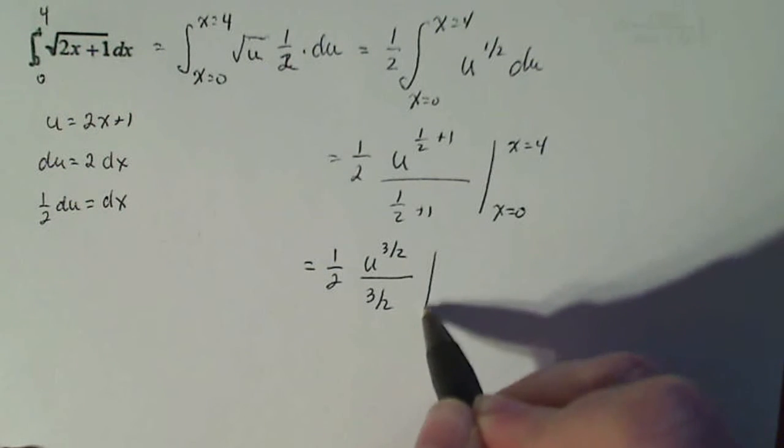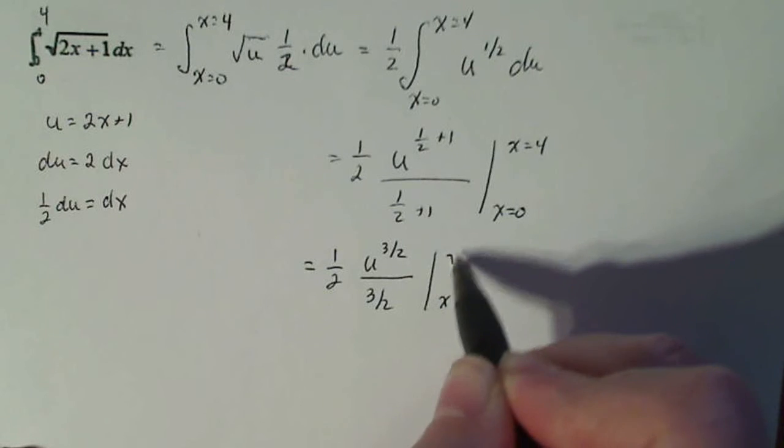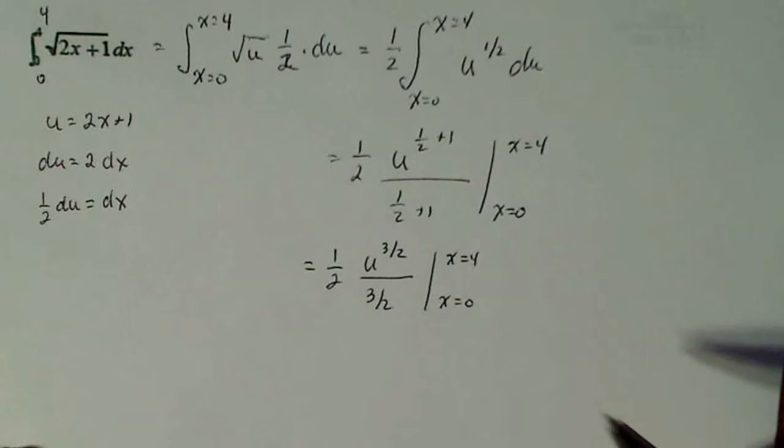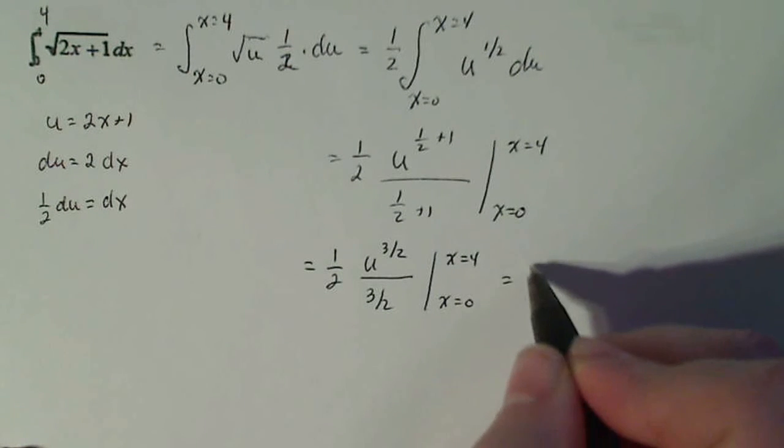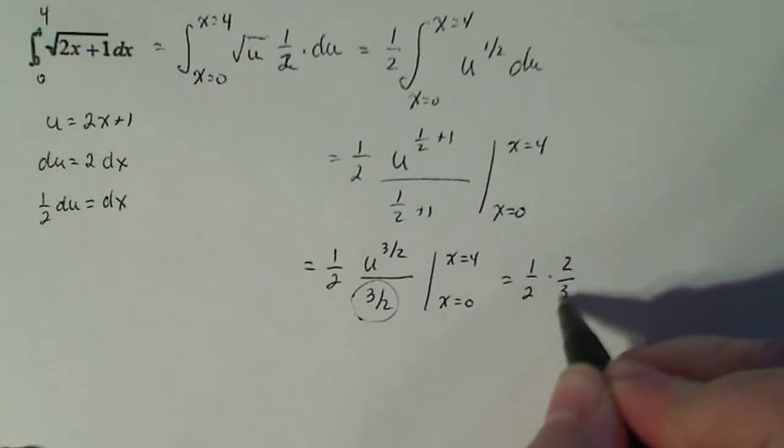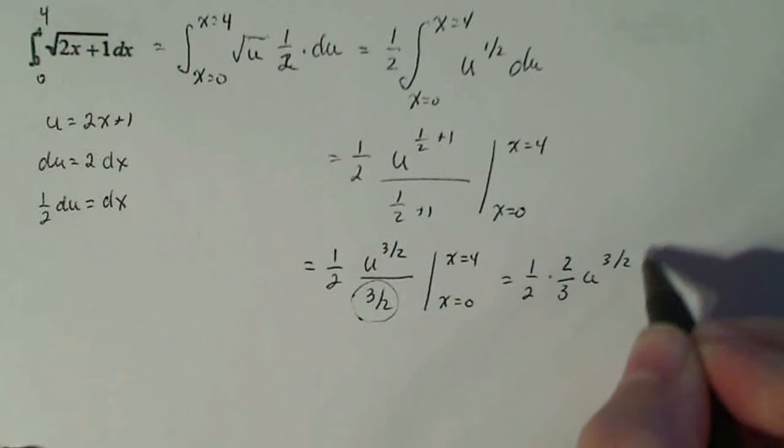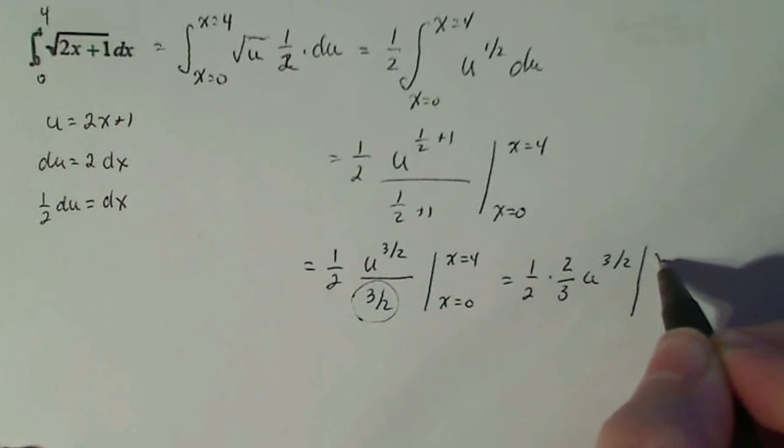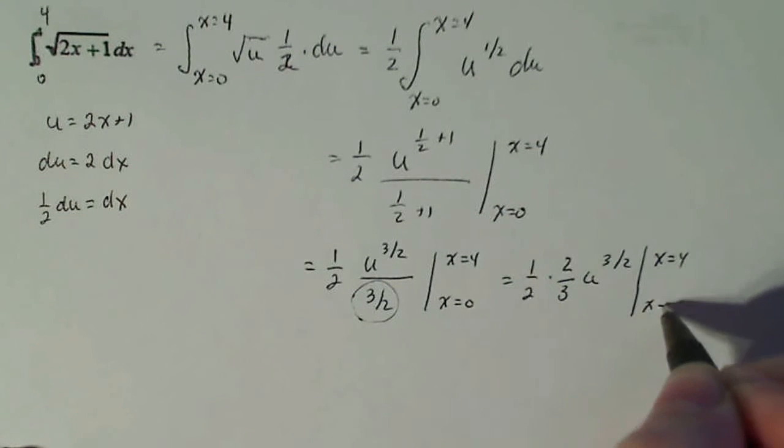But then don't forget everything—I know it's annoying to rewrite it, but just do it. But then this three halves, you take the reciprocal of it and multiply. So that's two thirds u to the three halves, x equals 4, x equals 0.